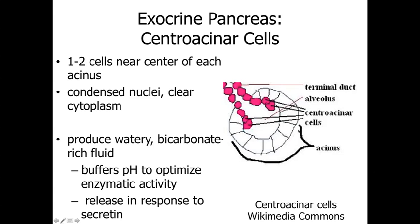The second type of cells within the exocrine pancreas are the central acinar cells — one or two cells towards the center of each acinus. These are going to be paler cells, in contrast to the basally basophilic pancreatic acinar cells secreting the digestive enzymes. These cells are going to be clearer, towards the center of each acinus, and they're going to be involved with secreting a watery, bicarbonate-rich fluid. That's important because it buffers the pH of the highly acidic materials coming out of the stomach — protecting the lining of the small intestine and neutralizing the pH so that digestive enzymes work better. The central acinar cells respond to secretin, a hormone released by enteroendocrine cells in response to acid building up within the small intestine.